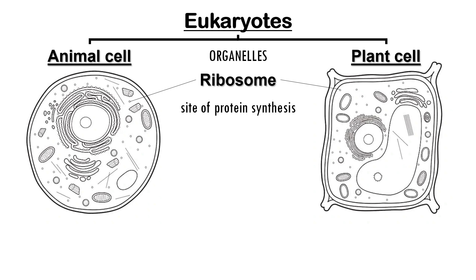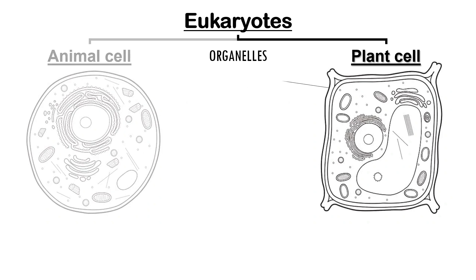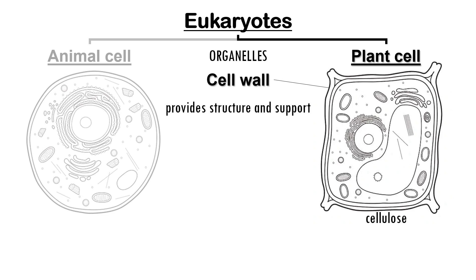Everything we've just mentioned is found in both animal and plant cells, but plant cells also have a few extra structures that animal cells don't. Plant cells have a rigid cell wall that surrounds the entire cell, outside the cell membrane. It's made from a tough material called cellulose, which provides structure and support. This wall helps the cell stay in shape and prevents it from bursting if too much water enters.